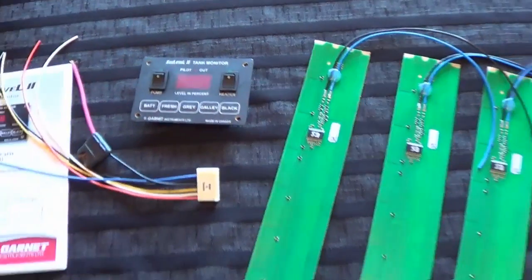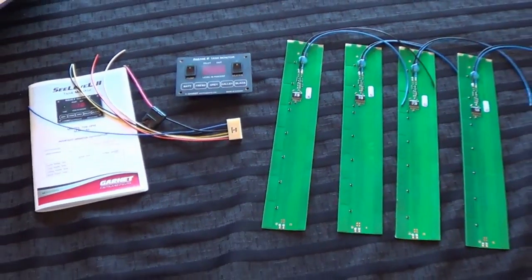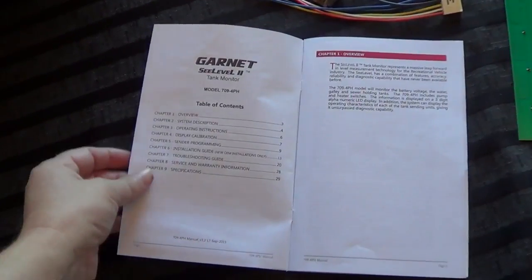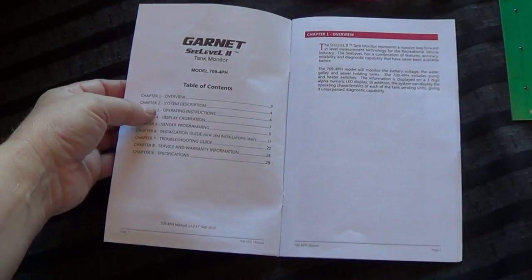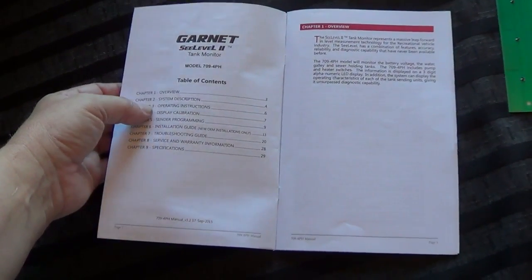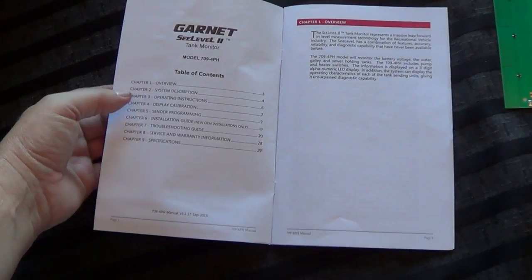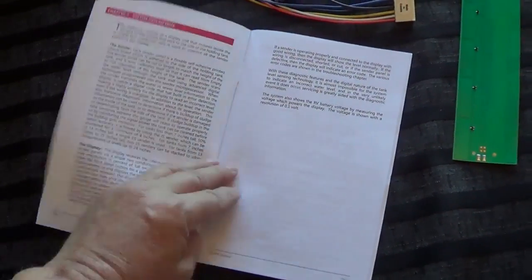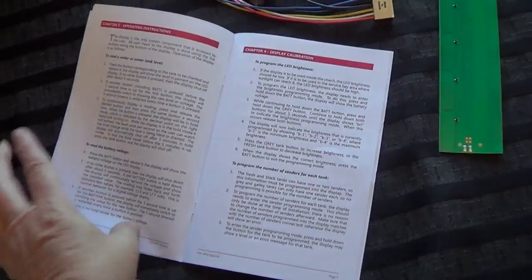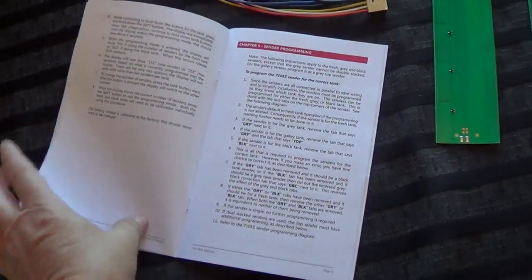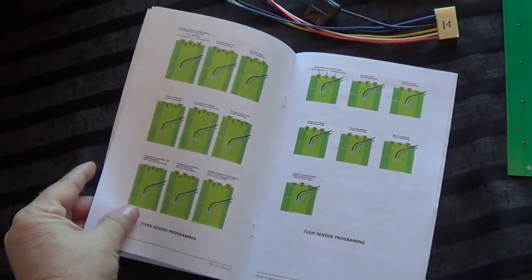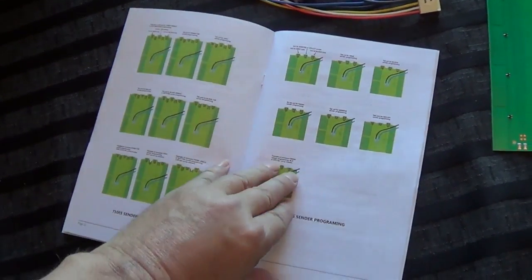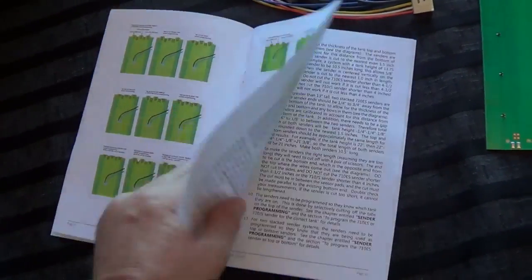Okay. So with a quick look at the manual, I can see we've got system description, operating instructions, display calibration, sender programming, installation guide. So I'm going to spend today reading through all this, kind of trying to understand exactly what I'm going to do. Oh yeah, I've got some illustrations of cutting the tabs there.